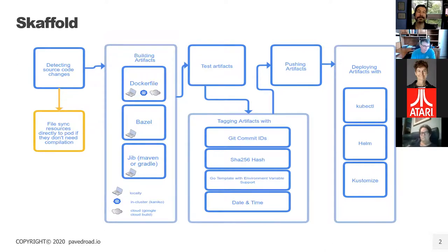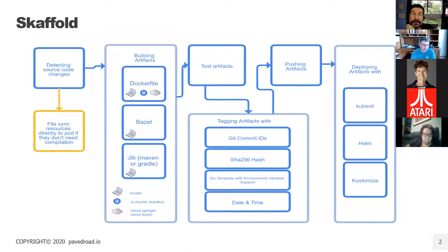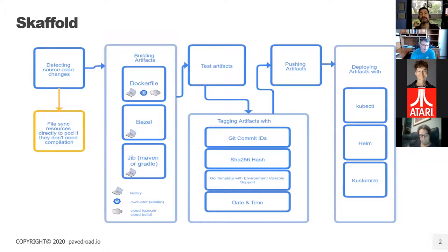We like Scaffold because it has a better data model and is closer to the way a CI/CD pipeline should be built. At a high level, Scaffold works as a continuous development tool. It watches source files for changes and recompiles those components. There's a builder component — whether it takes a Dockerfile, a Bazel file, or a custom builder — it builds and packages your application into a Docker container.